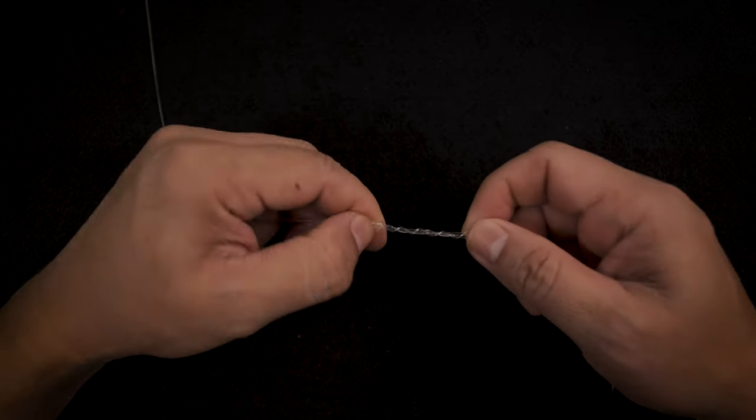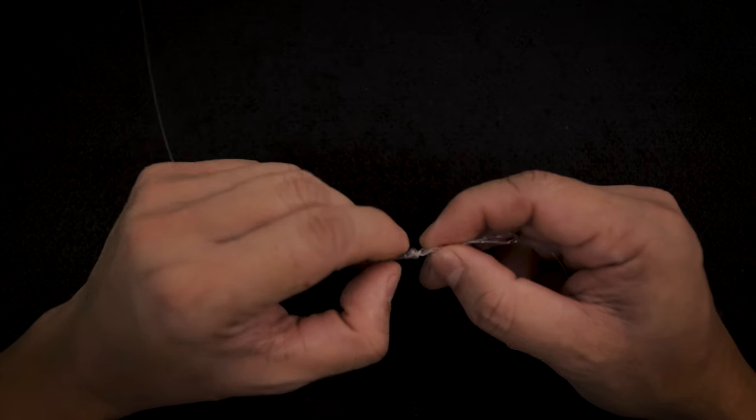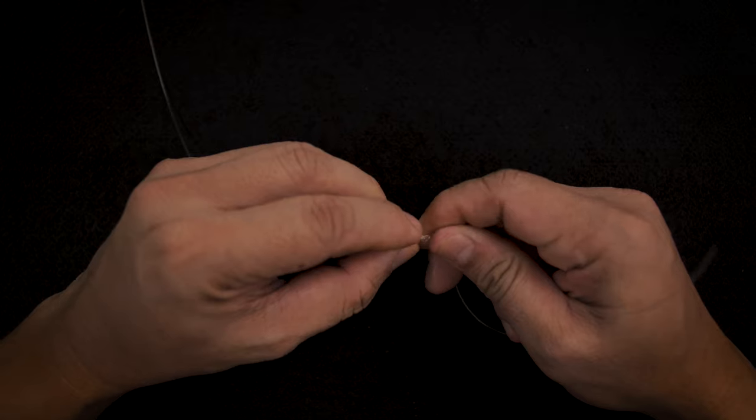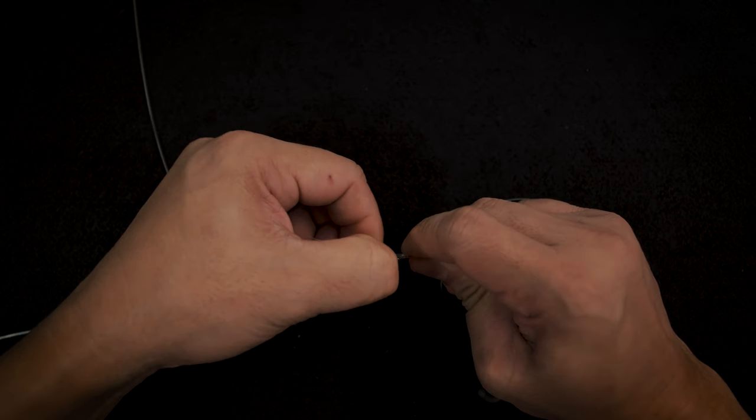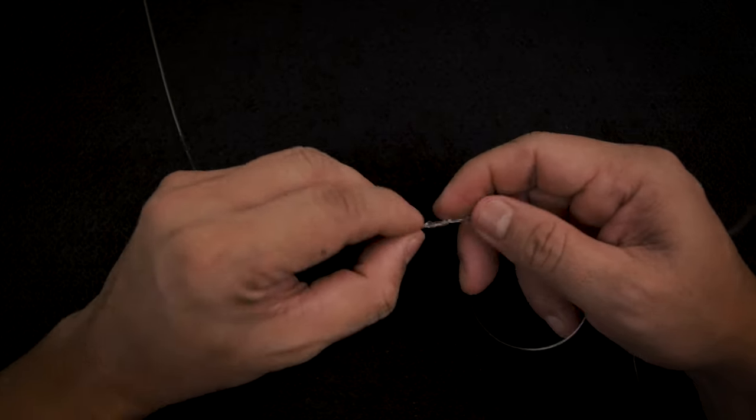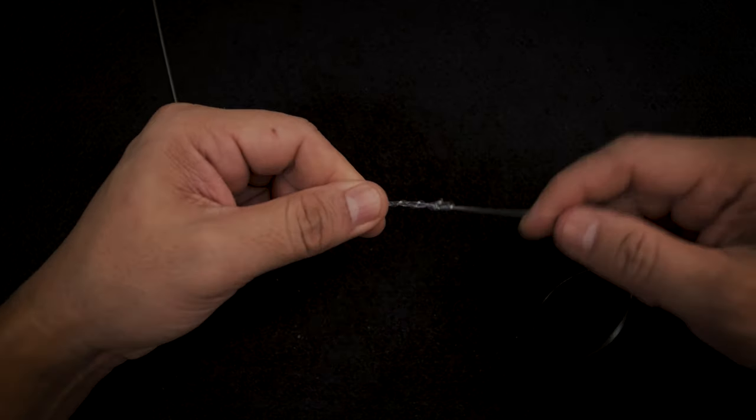None are actually going over each other. Now there are some loops that are going over. What you need to do is just spread them apart and what they'll do is actually just fall into their place right there like that.